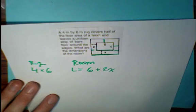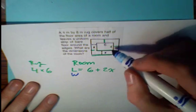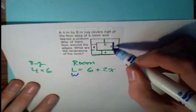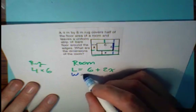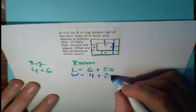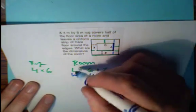The width of the room, if you consider 4 to be the width of the rug, we have two strips of bare floor, so it's 4 plus 2x. That's the room.